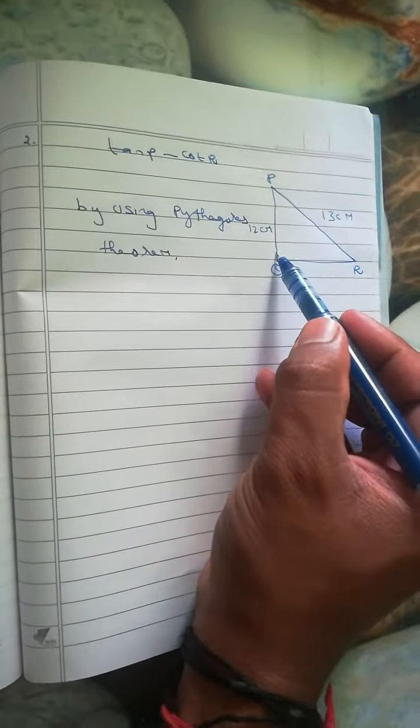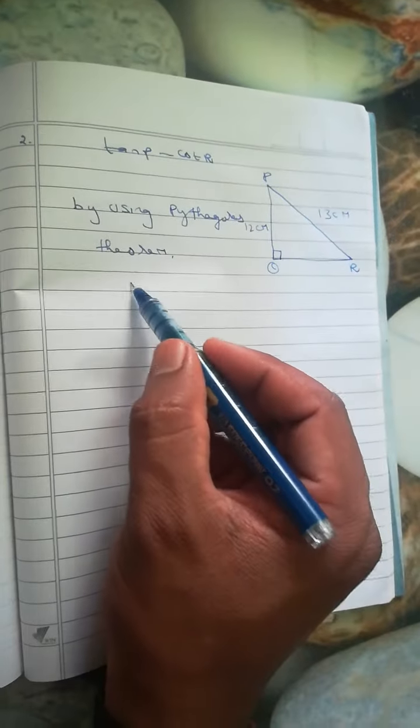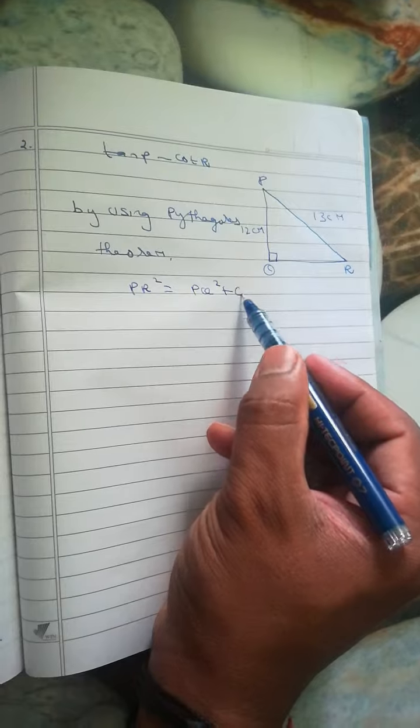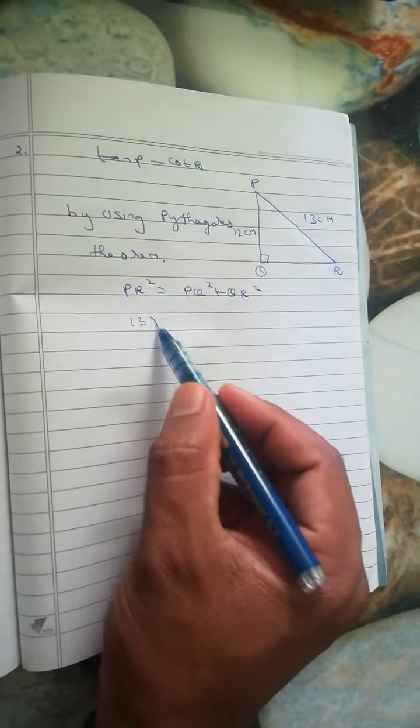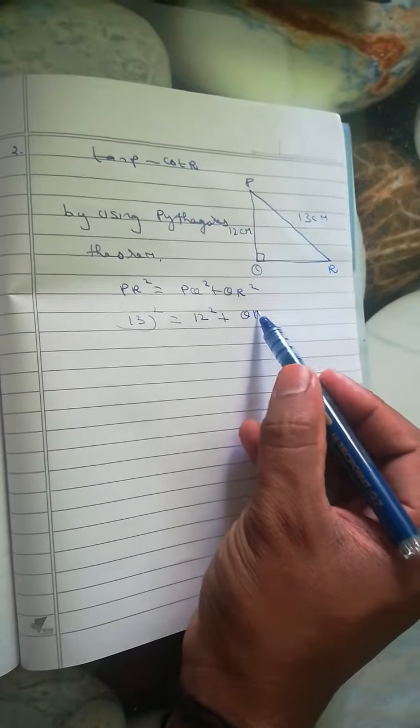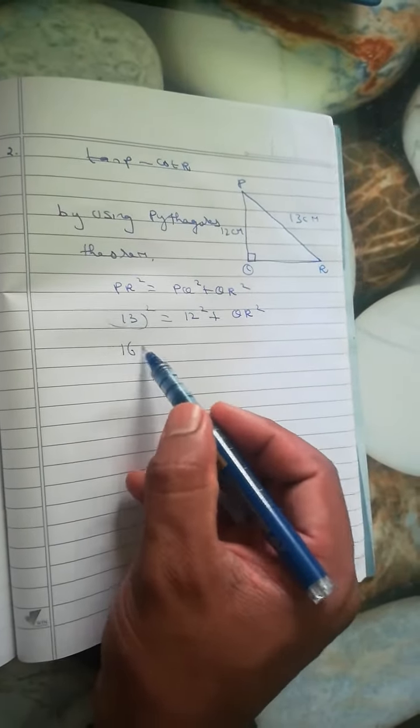Pythagoras theorem means hypotenuse first, so PR² = PQ² + QR². PR is given here as 13, so 13² equals 169. PQ is 12², which is 144, and QR is not given. So 169 = 144 + QR².